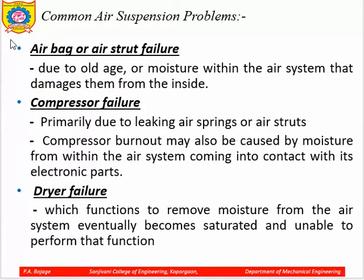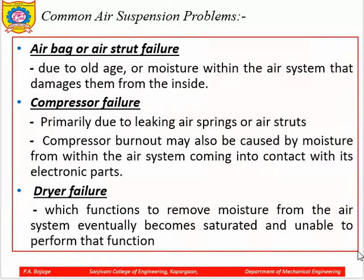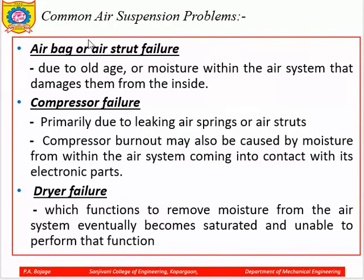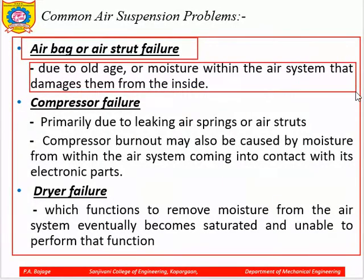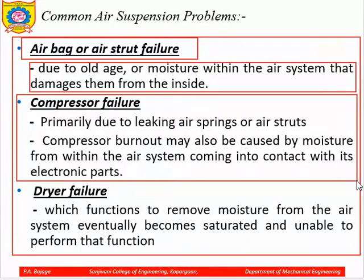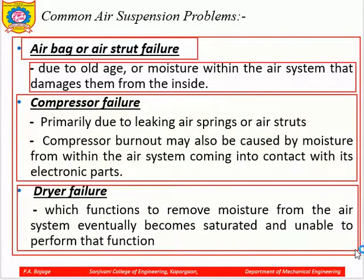Common air suspension problems: The first is air bag or air spring failure — due to old age or moisture within the air system that damages it from inside. Next is compressor failure; without high-pressure compressed air supply, the system fails. There is also a dryer, because the air must be dry — moisture is not good for the rubber parts. If this dryer fails, that is also one of the problems related to the air suspension system.